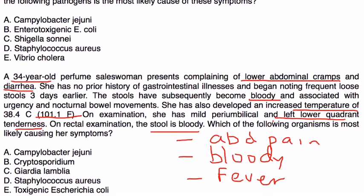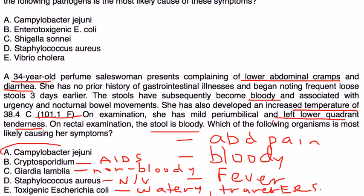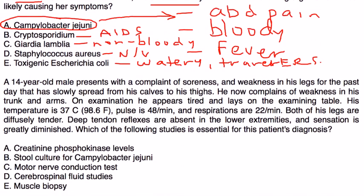Going through the differentials: E. coli causes watery traveler's diarrhea. Staph aureus is food poisoning presenting with significant nausea and vomiting, which she doesn't have — and the foods aren't mentioned. Giardia is a non-bloody diarrhea. Cryptosporidium affects AIDS patients. By process of elimination and matching the clinical vignette, the answer is C. jejuni.